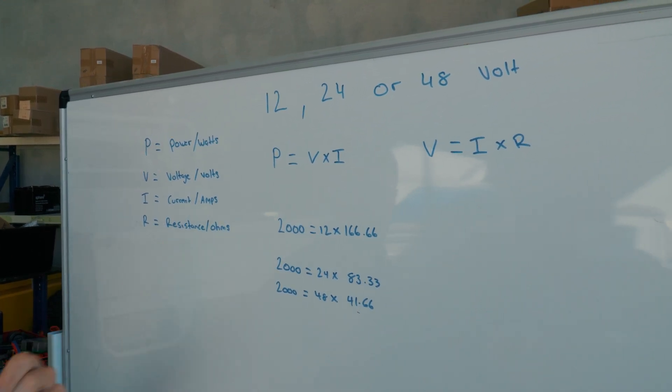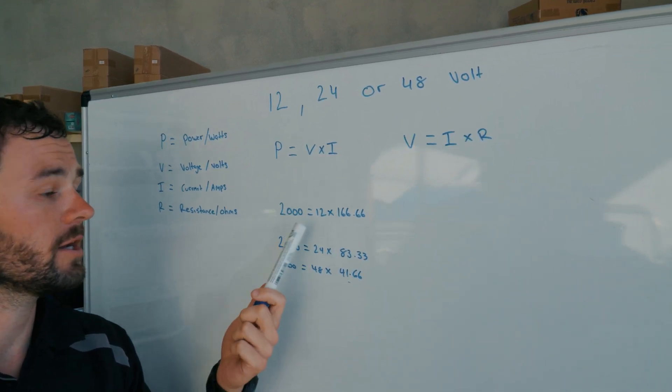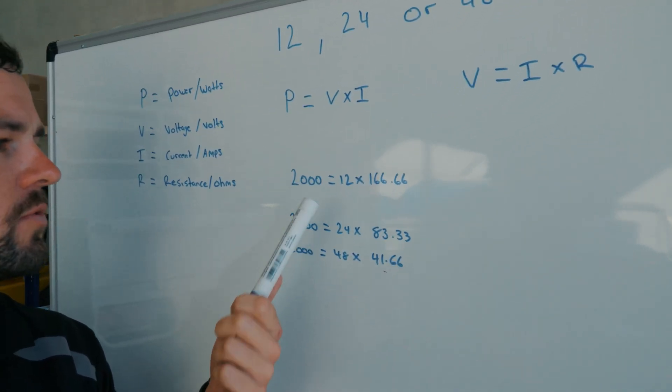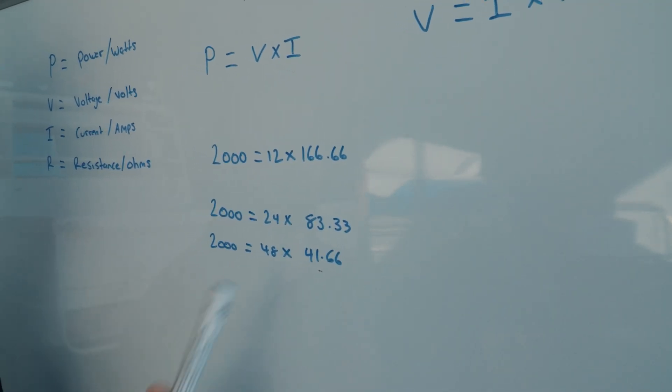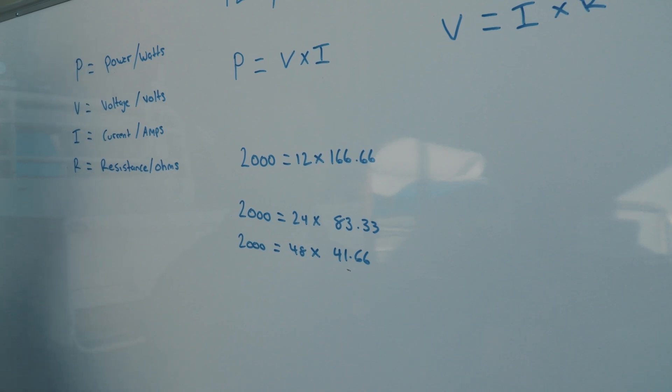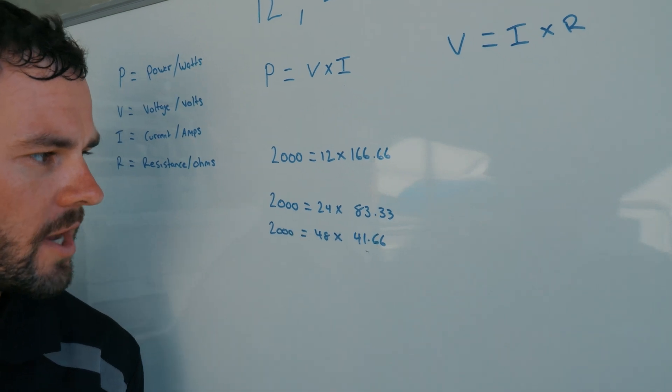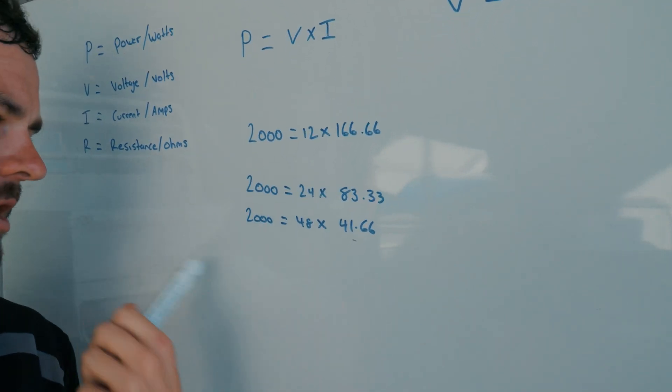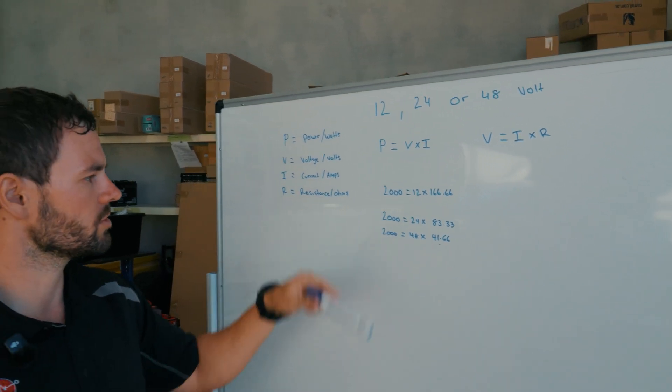So really, all you end up doing is just going, so if you've got a 2,000-watt inverter at 12 volts, it'll just be 12 divided by 2,000, which will work out how many amps that's going to consume. So it's going to consume 166 amps at 12 volts. Same equation, if you then went 24, you divide by 24, equals 83.33, and then if you went 48, it's 41.66. So that's how many amps you're going to end up drawing at those voltages.